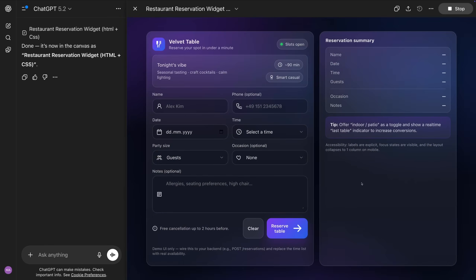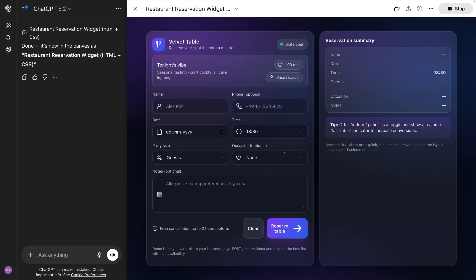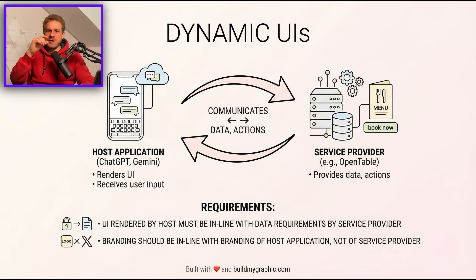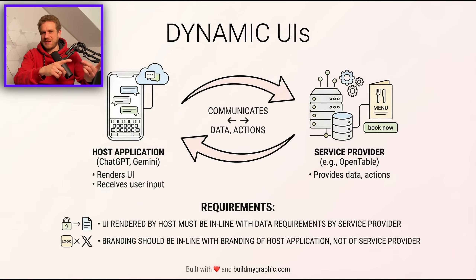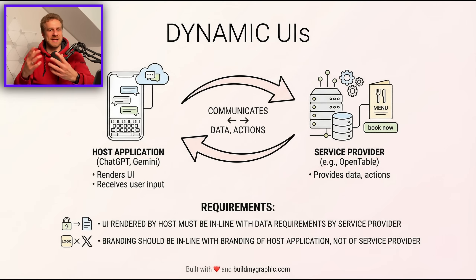One problem is that the UI the AI generates has to kind of fit the third-party service it then interacts with. Because if you're booking a restaurant table, Google is not booking it — behind the scenes, some third-party service like OpenTable might be used, which then does the actual reservation. So the AI needs to communicate with OpenTable, and the user interface it renders must be in line with the data OpenTable expects and supports. So it's a bit trickier than that.